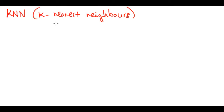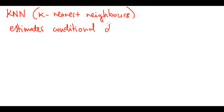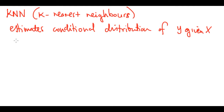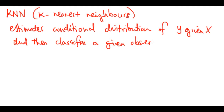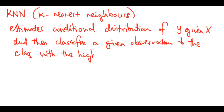What KNN does is it estimates the conditional distribution of the classes y given the observations x, and then classifies a given observation to the class with the highest probability.